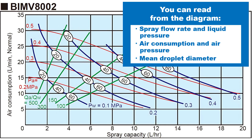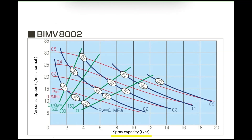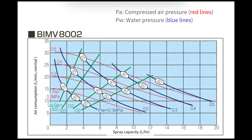Let's start with the flow rate diagram. From the diagram you can read the liquid spray flow rate and pressure, the air consumption and pressure, and the mean droplet diameter. Spray flow rate is on the horizontal axis and air consumption is on the vertical axis. The blue and red lines indicate the liquid and air pressures respectively.